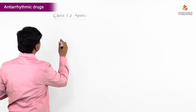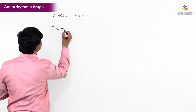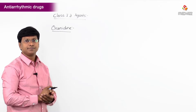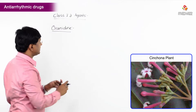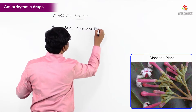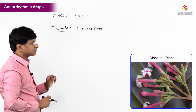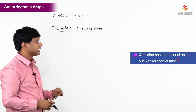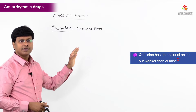Let me discuss Class 1A agents, which includes quinidine. Quinidine is a derivative of the cinchona plant. Remember, quinidine also has anti-malarial action, but the anti-malarial action of quinidine is poorer than quinine.